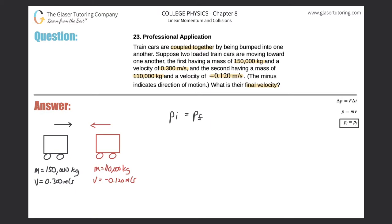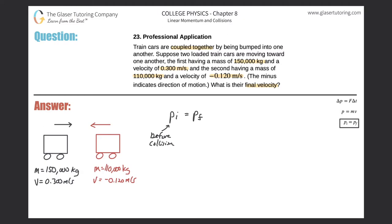So what we have to try to frame out is what is the initial state of the system and what would be considered the final state of the system. We would consider the initial state of the system the point just before the impact between the two trains. So before the two trains meet, they are indeed separate — this is before collision. And then the final momentum will be the momentum after the collision.